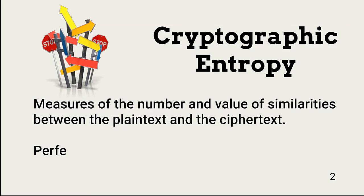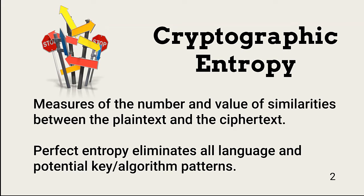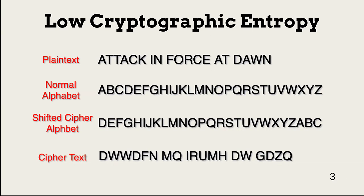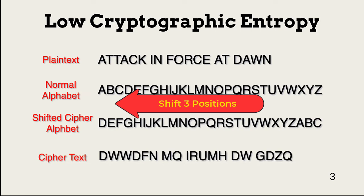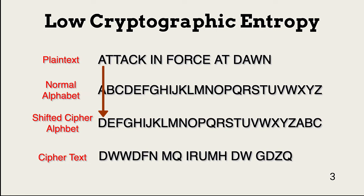Before trying to understand encryption, we need to understand cryptographic entropy. Cryptographic entropy is the measure of the number and value of similarities between plain text and resulting cipher text. This is a sample of a simple substitution cipher — I shifted the normal alphabet three positions to the left and substituted the plain text letters with letters in their normal alphabetic positions.